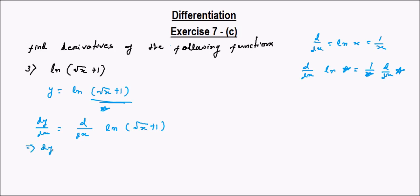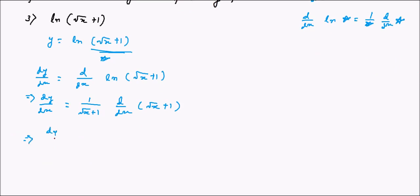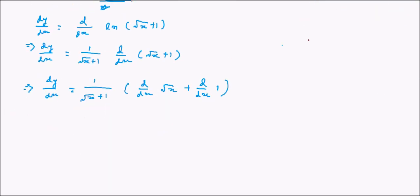So dy/dx equals dy/dx of ln(root x plus 1), which implies dy/dx is equal to 1 by (root x plus 1) into dy/dx of (root x plus 1). This further expands to: 1 by (root x plus 1) into [dy/dx of root x plus dy/dx of 1]. Now root x means square root of x, which is x to the power 1 by 2.